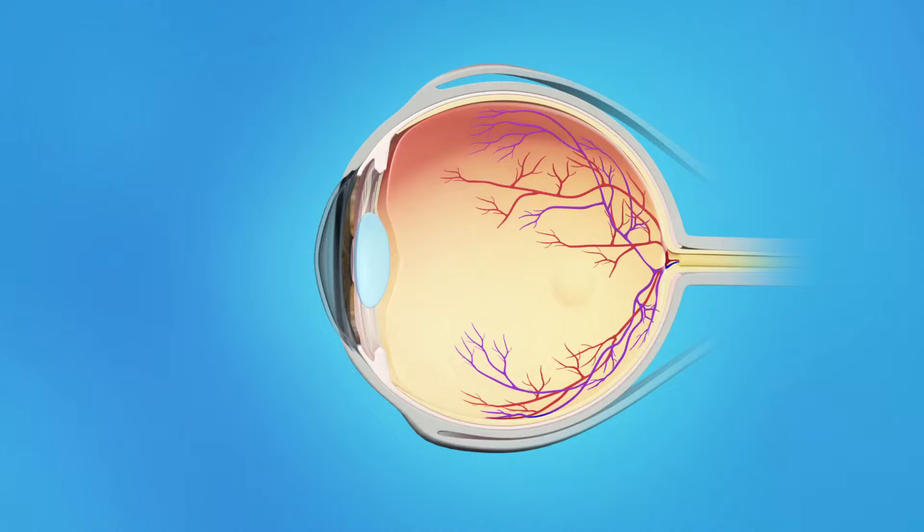The inner eye is filled with a clear, jelly-like substance called vitreous. As we age, the vitreous becomes less like jelly and more like liquid. Usually the vitreous is only loosely attached to the retina, so as the eye moves, the vitreous moves away from the macula without causing problems.